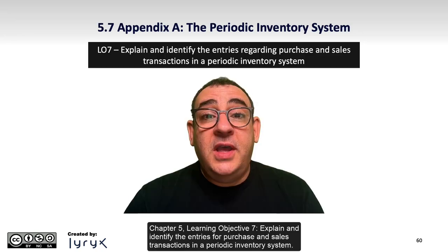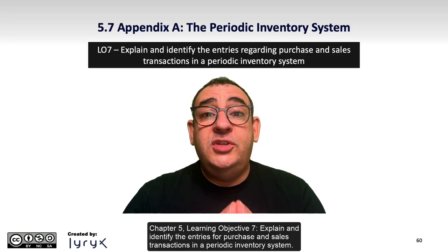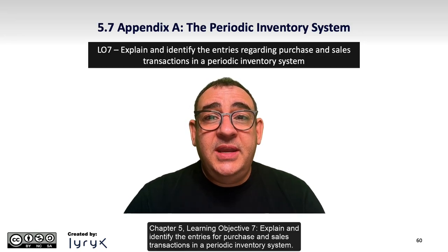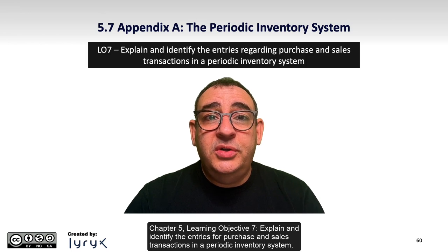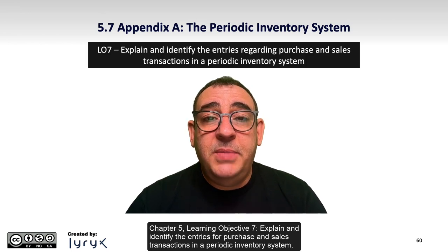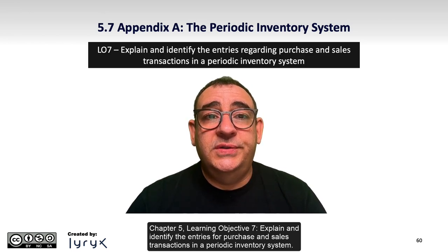Chapter 5, Learning Objective 7: Explain and identify the entries for purchase and sales transactions in a periodic inventory system.